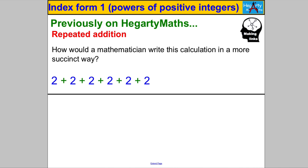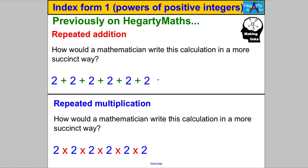To start with, if someone said 2 add 2 add 2 add 2 add 2 add 2 — 2 added to itself six times — mathematicians have a way of writing that: they would say that is 6 multiplied by 2, or 6 lots of 2. Now I want you to consider, in the same way that this is 6 lots of 2, imagine instead of a repeated addition, you had a repeated multiplication: 2 times 2 times 2 times 2 times 2 times 2.